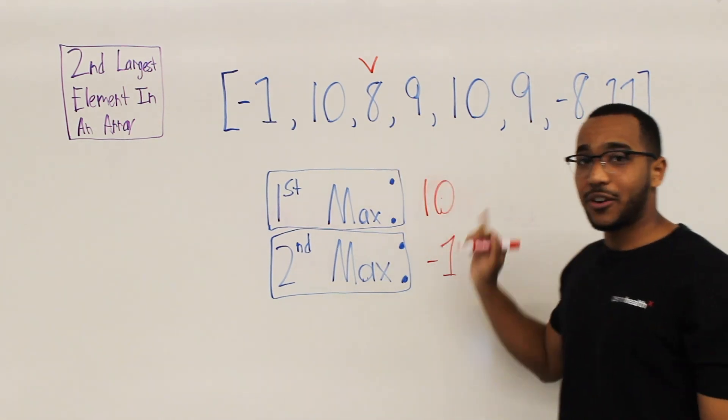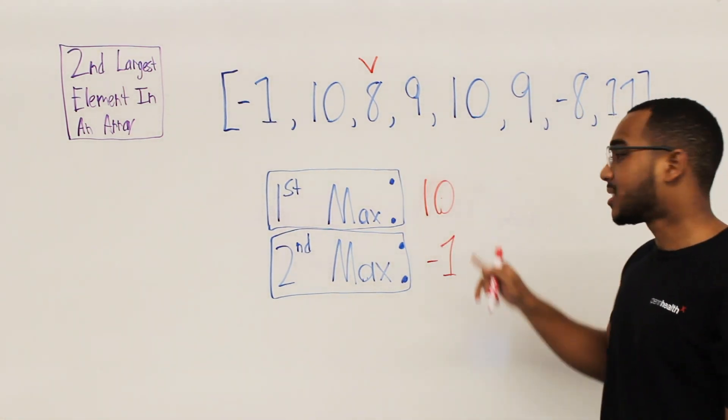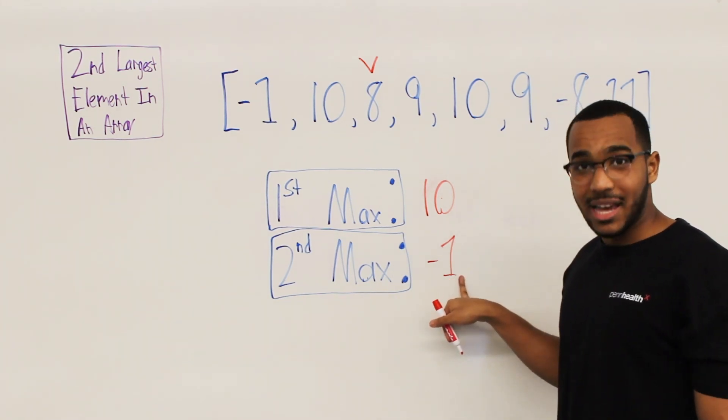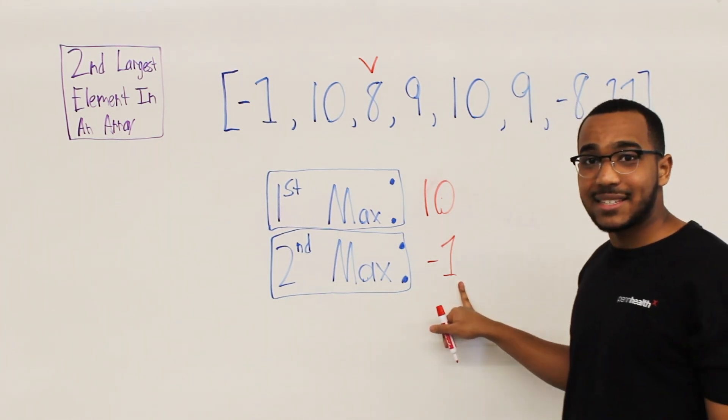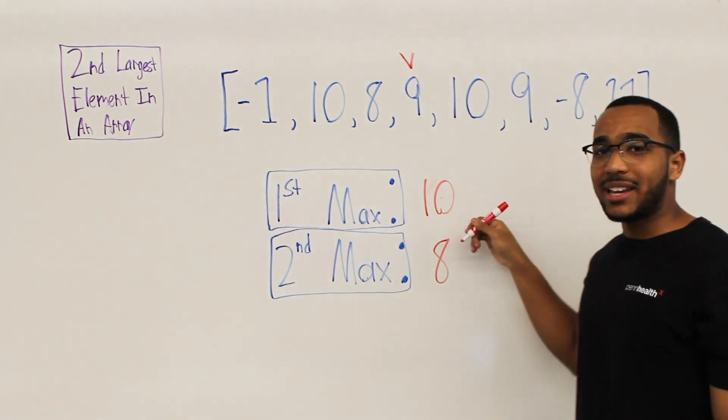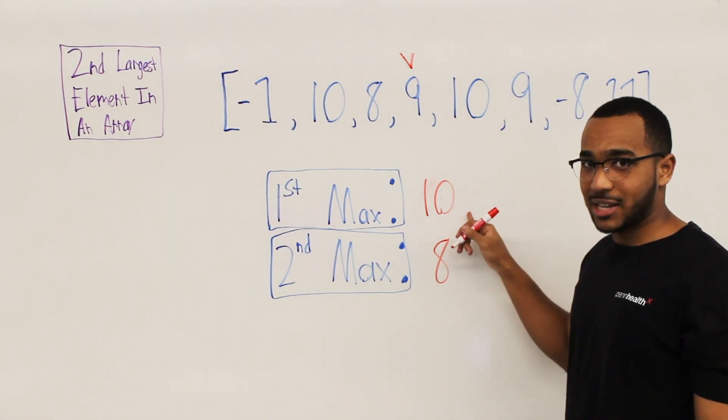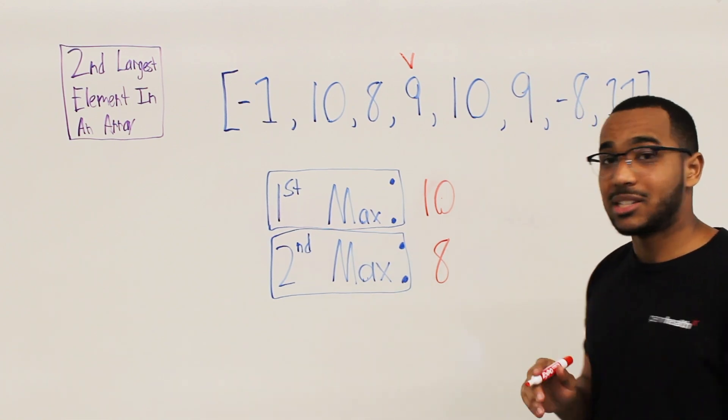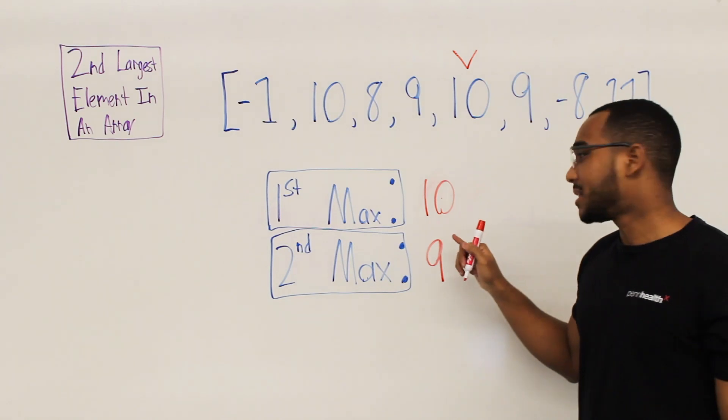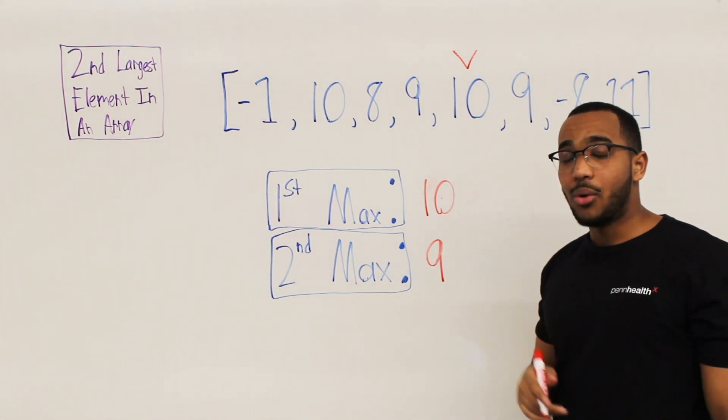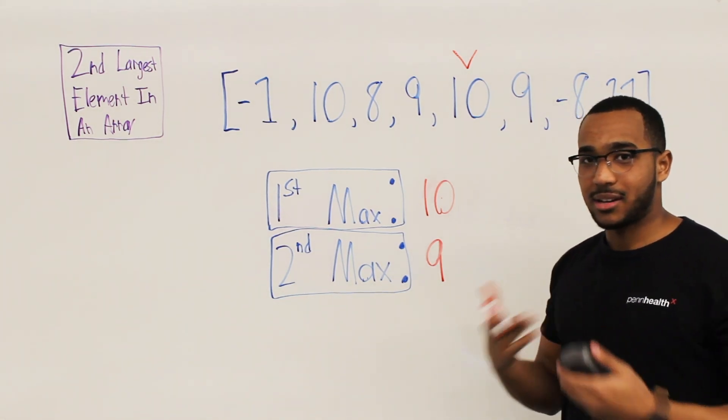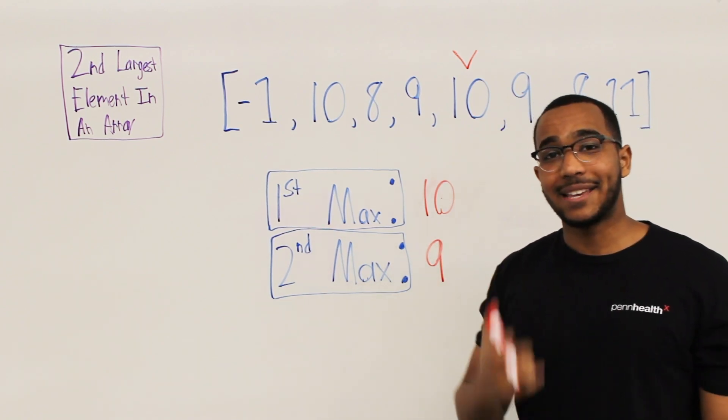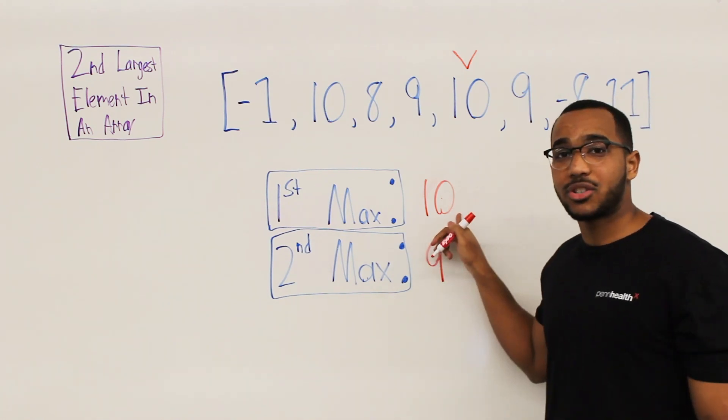So does eight beat the first maximum? No, it does not. So then we drop down. We say, does eight beat the second maximum? Yes, it does. So now eight is the second maximum. So now we say nine, does nine beat the 10 as first maximum? No, it does not. Does it beat eight as the second maximum? Yes, it does. So does 10 beat 10 as the first maximum? No, it does not beat 10 because 10 is 10. But does 10 beat nine? Yes, it does.